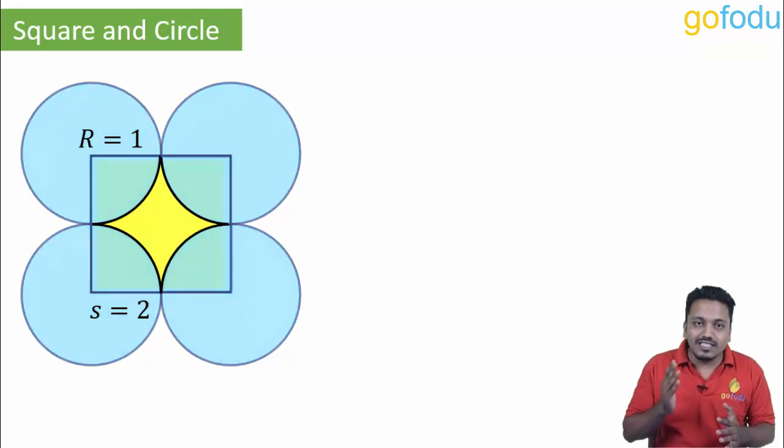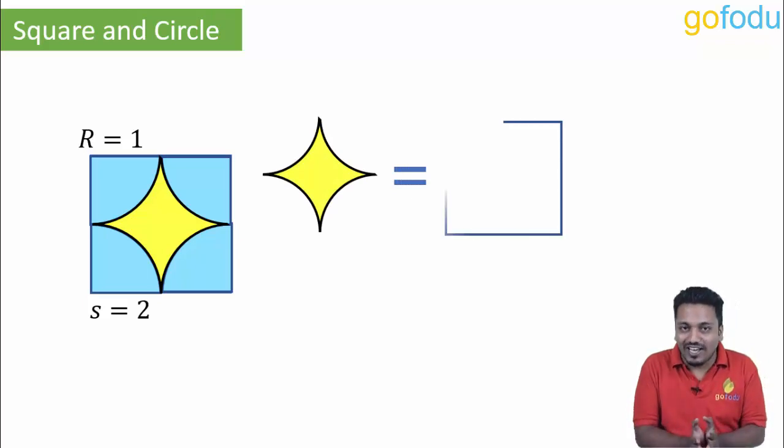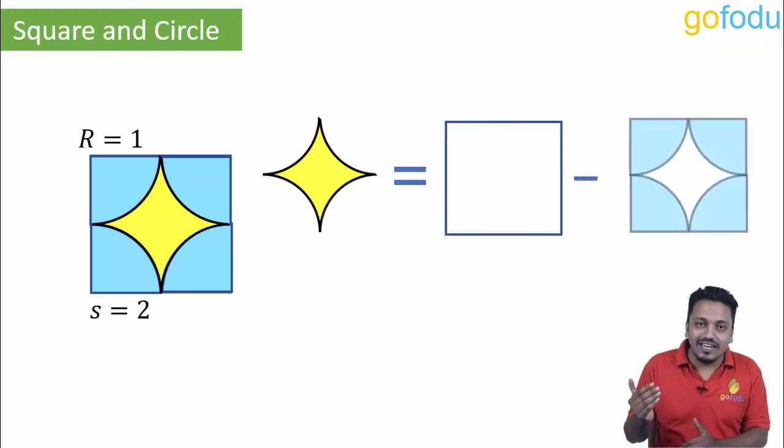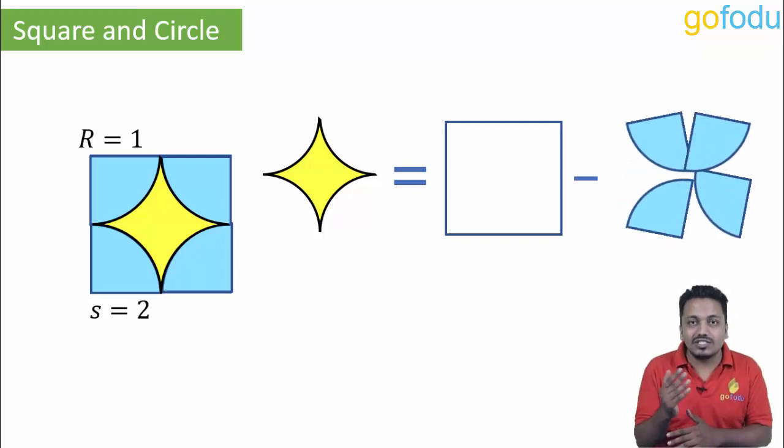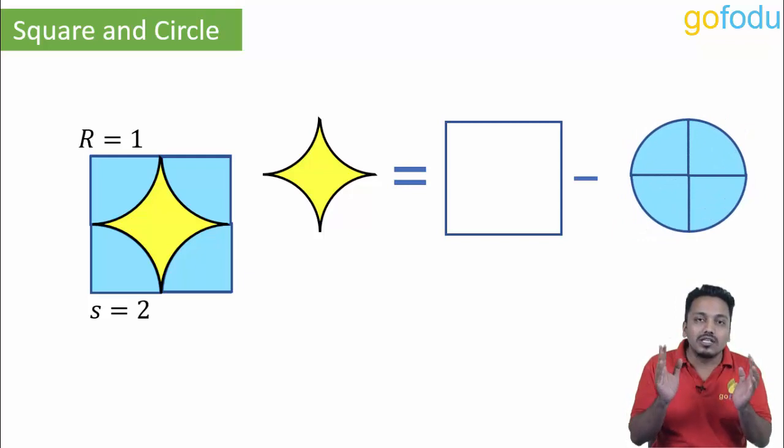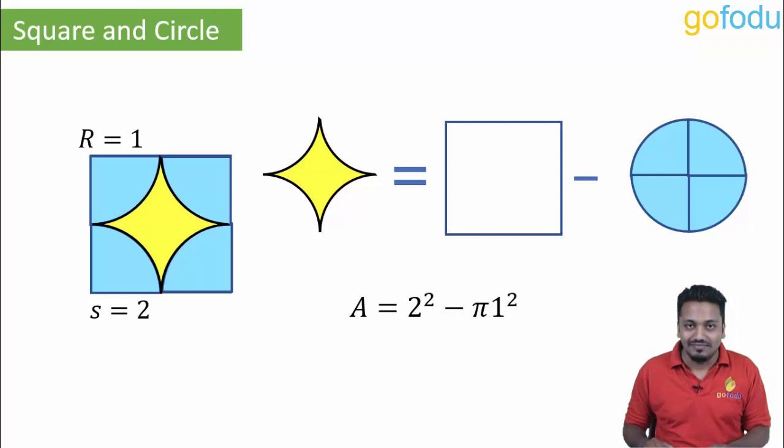Let's focus on just the square. The required area is area of square minus the area of four quarter circles. Now these quarter circles can be rearranged to form one full circle. So this is side square minus pi r square. Four minus pi is the answer.